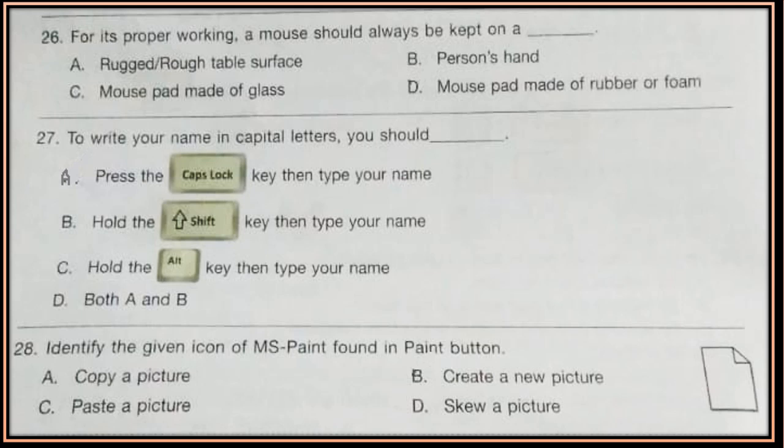Question 27. To write your name in capital letters, you should: press the Caps Lock key then type your name, hold the Shift key then type your name, hold the Alt key then type your name, or both A and B.